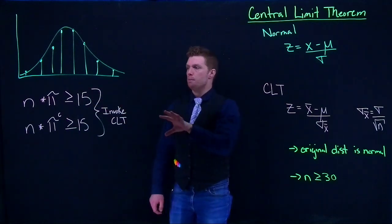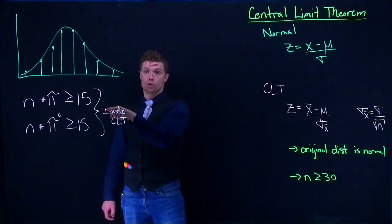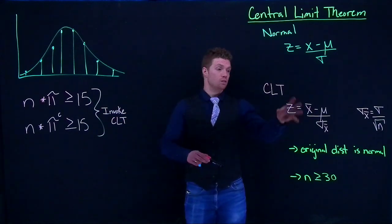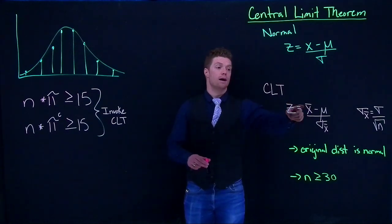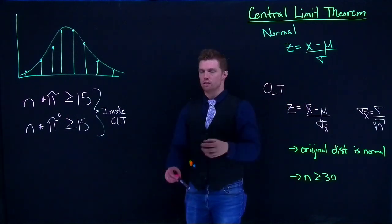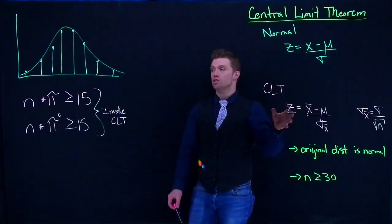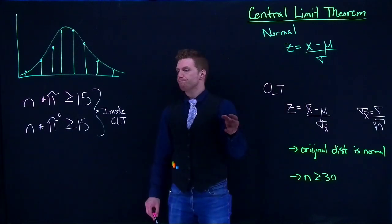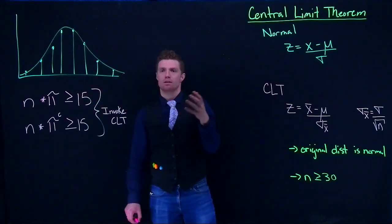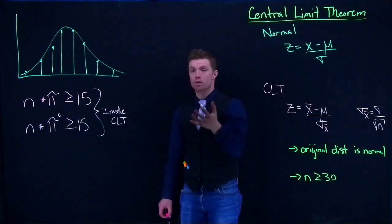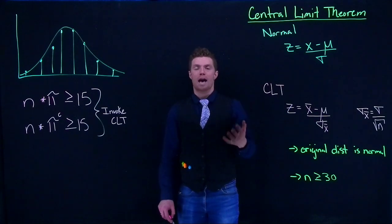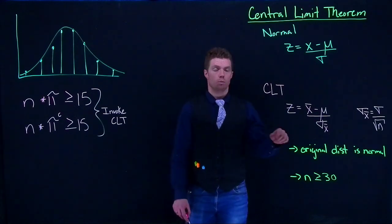So if we can get a scenario, a binomial scenario where this is true, then what we can do is we can model, we can tweak our central limit theorem. But instead of talking about means, we're going to talk about true proportions and sample proportions, and this really allows us to start talking about some categorical data, right, or this discrete data. We can talk about the number of cars in the car lot that are yellow, we can start talking about some categorical data using our normal distribution.